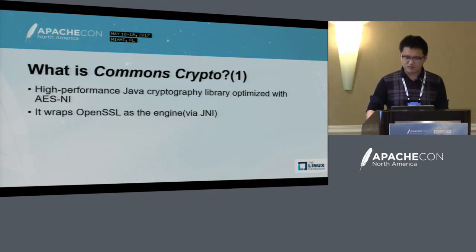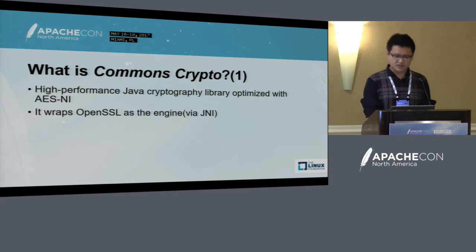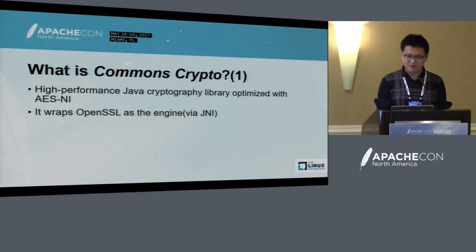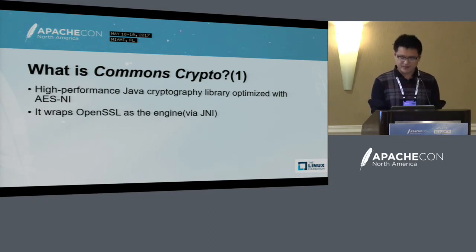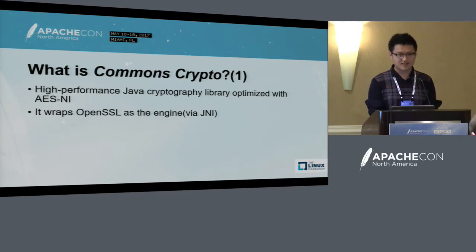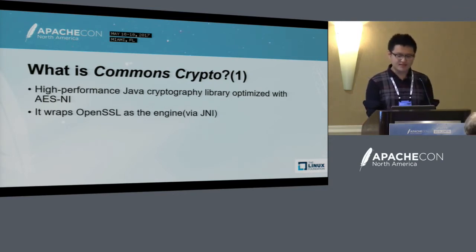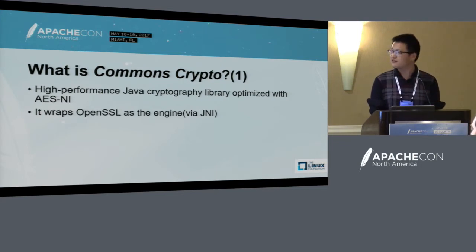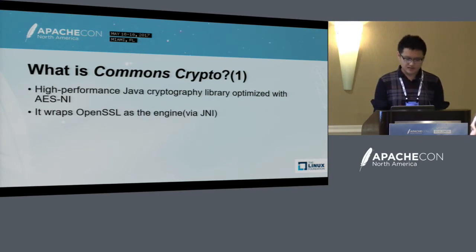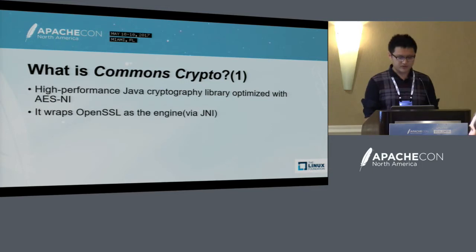Let's go back to what is Apache Commons Crypto. This is a high-performance Java cryptographic library, which is optimized by Intel AES-NI technology. It wraps OpenSSL and the JCE engine, and we use JNI as the bridge between Java and the native layer.